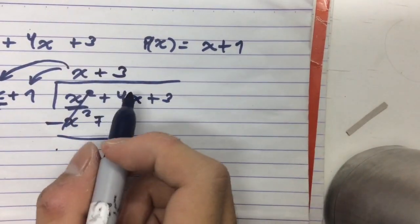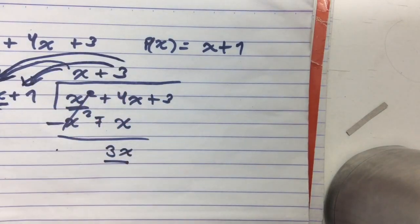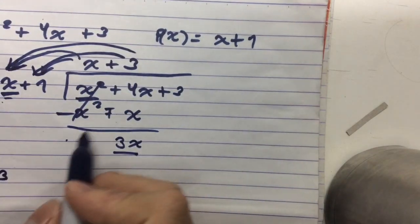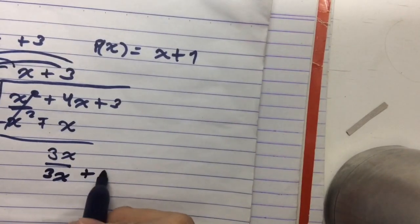We just put it up there. And after that, we multiply this with each term. So this would become 3x plus 3.